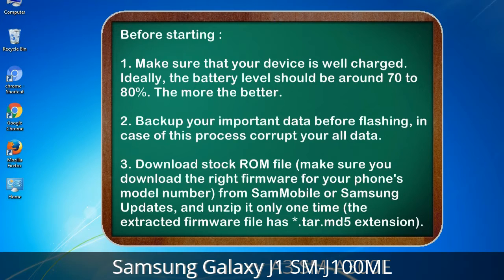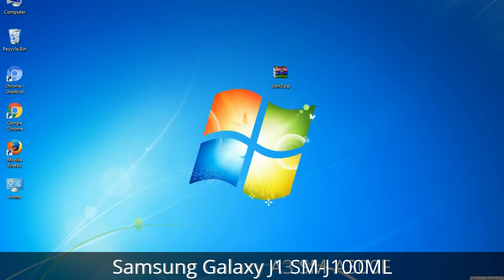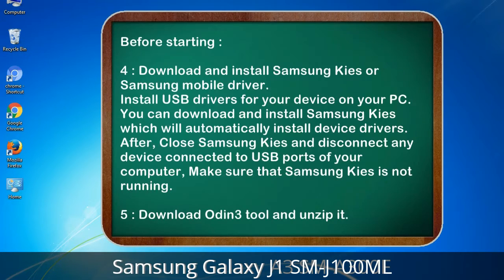Make sure you download the right firmware for your phone's model number, from Sammobile or Samsung Updates, and unzip it only one time. The extracted firmware file has a *.tar.md5 extension. 4. Download and install Samsung Kies or Samsung mobile driver, and install USB drivers for your device on your PC.